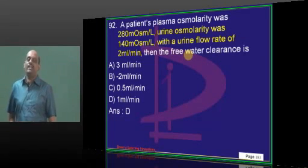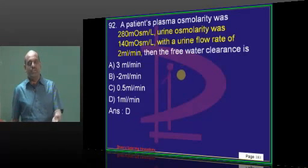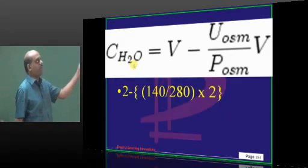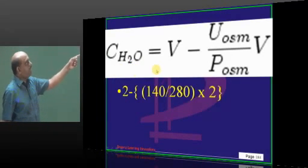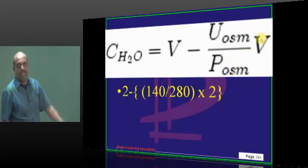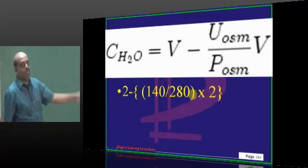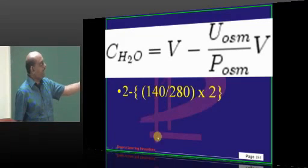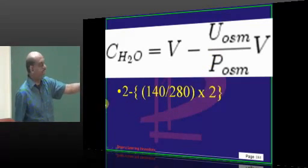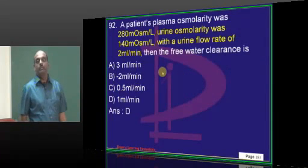Various values are given and you are asked to count free water clearance. First you need to know how to calculate free water clearance: it is volume of urine minus (urinary osmolality divided by plasma osmolality, multiplied by volume of urine). So: 2 minus (140 by 280) into 2 — 140 by 280 is half, half into 2 is 1, 2 minus 1 is 1. That is how the answer becomes 1.